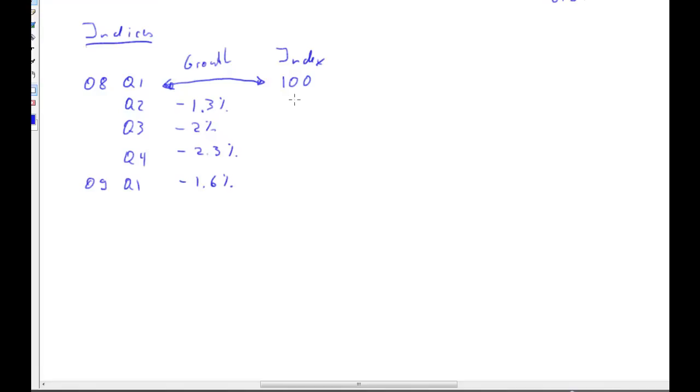And now, for all following periods, we want to see how that series grows or not grows. Now, if we have a growth rate of negative 1.3%, we immediately know what that value should be here. It should be 98.7. Because from quarter one to quarter two, the series has shrunk by 1.3%. And if we shrink 100 by 1.3%, we get 98.7.